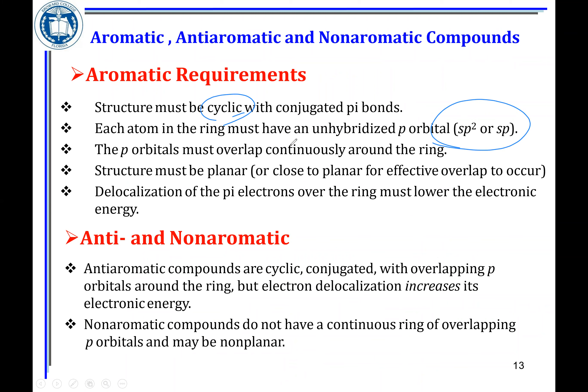Continuous overlap is the same thing as being conjugated. The structure must also be planar. If you have an eight-carbon ring and the problem says to assume a planar structure, you don't have to worry about that condition. But if it doesn't say planar and a choice says it's not planar, then it's non-aromatic. For anti-aromatic, the first conditions are met but 4n+2 is not. So four pi electrons or eight pi electrons — these are often anti-aromatic.